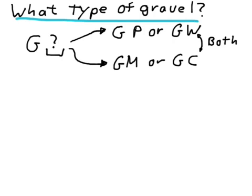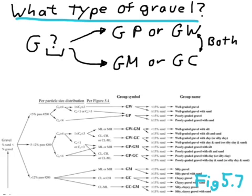It will be either a GP-GC, or a GP-GM, or GW-GM, etc. So to determine what is a small amount or a large amount of fines, we must refer to the ASTM classification chart. And this is part of figure 5.7, just the gravel portion.